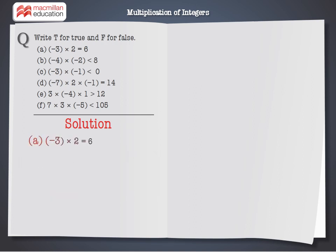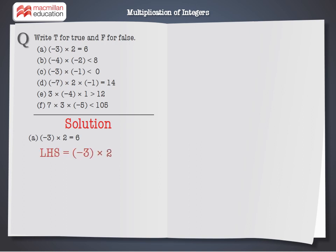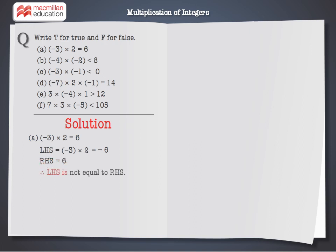A: Minus 3 into 2 is equal to 6. LHS equals minus 3 into 2, which equals minus 6. RHS equals 6. Therefore, LHS is not equal to RHS. Hence, minus 3 into 2 is equal to 6 is false.